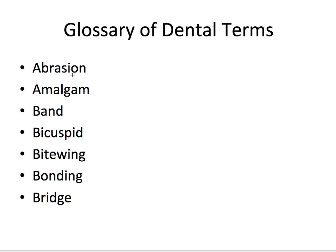Abrasion refers to wear on a tooth caused by brushing too hard, holding things in your teeth like the end of a pencil, and other rubbing actions like using a very abrasive toothpaste. Amalgam refers to a dental filling material made up of a mixture of metals such as mercury, silver, tin, and copper — also known as a silver filling. A band refers to a metal ring put around a tooth with cement as part of orthodontic treatment.